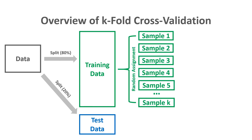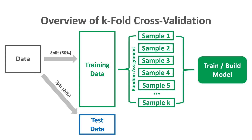Focusing on the training data, this is where we apply the formal k-fold cross-validation process. From that training data, we randomly assign cases to various subsamples. Here I show five subsamples, and you can extend that up to k subsamples — this is where the language around k subsamples or k-folds comes into play.